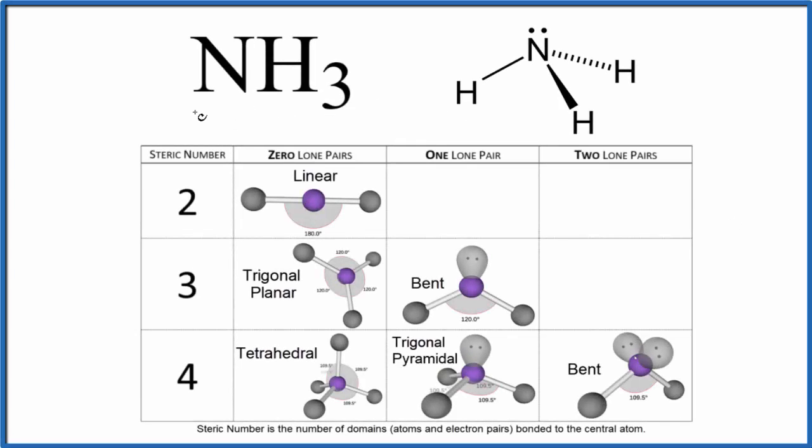Let's take a look at the molecular geometry for NH3. This is ammonia. We'll also look at the bond angles and the electron geometry.